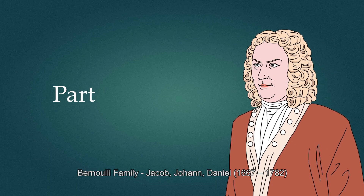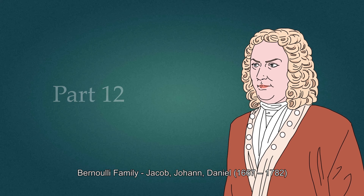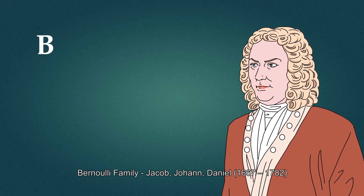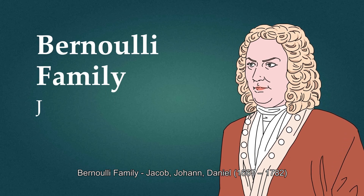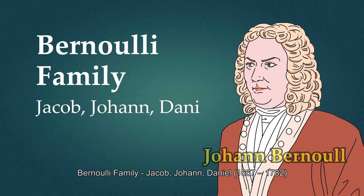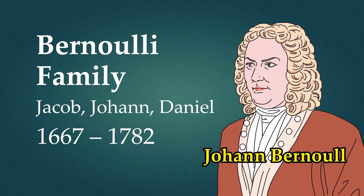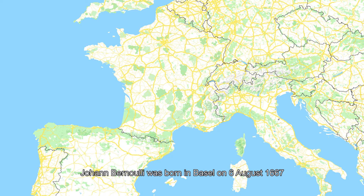The Bernoulli family: Jacob, Johann, Daniel — 1667 to 1782. Johann Bernoulli was born in Basel on August 6, 1667.